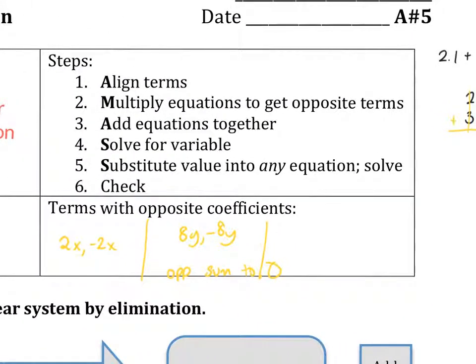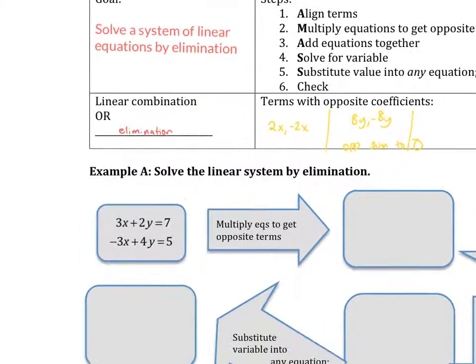So we're going to add the equations together. Why? Because something's going to break down and be deleted. You solve for the remaining variable. You substitute that value into any equation, and you solve for the last variable. And then you just double check. So we're going to go step by step through this.